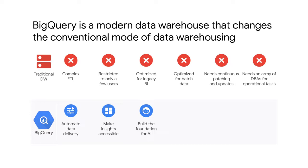BigQuery lays the foundation for artificial intelligence. It's possible to train TensorFlow and Google AI Platform models directly with datasets stored in BigQuery. BigQuery ML can be used to build and train machine learning models using simple SQL. Another extended capability is BigQuery GIS, which allows organizations to analyze geographic data in BigQuery — essential to many critical business decisions that revolve around location data.